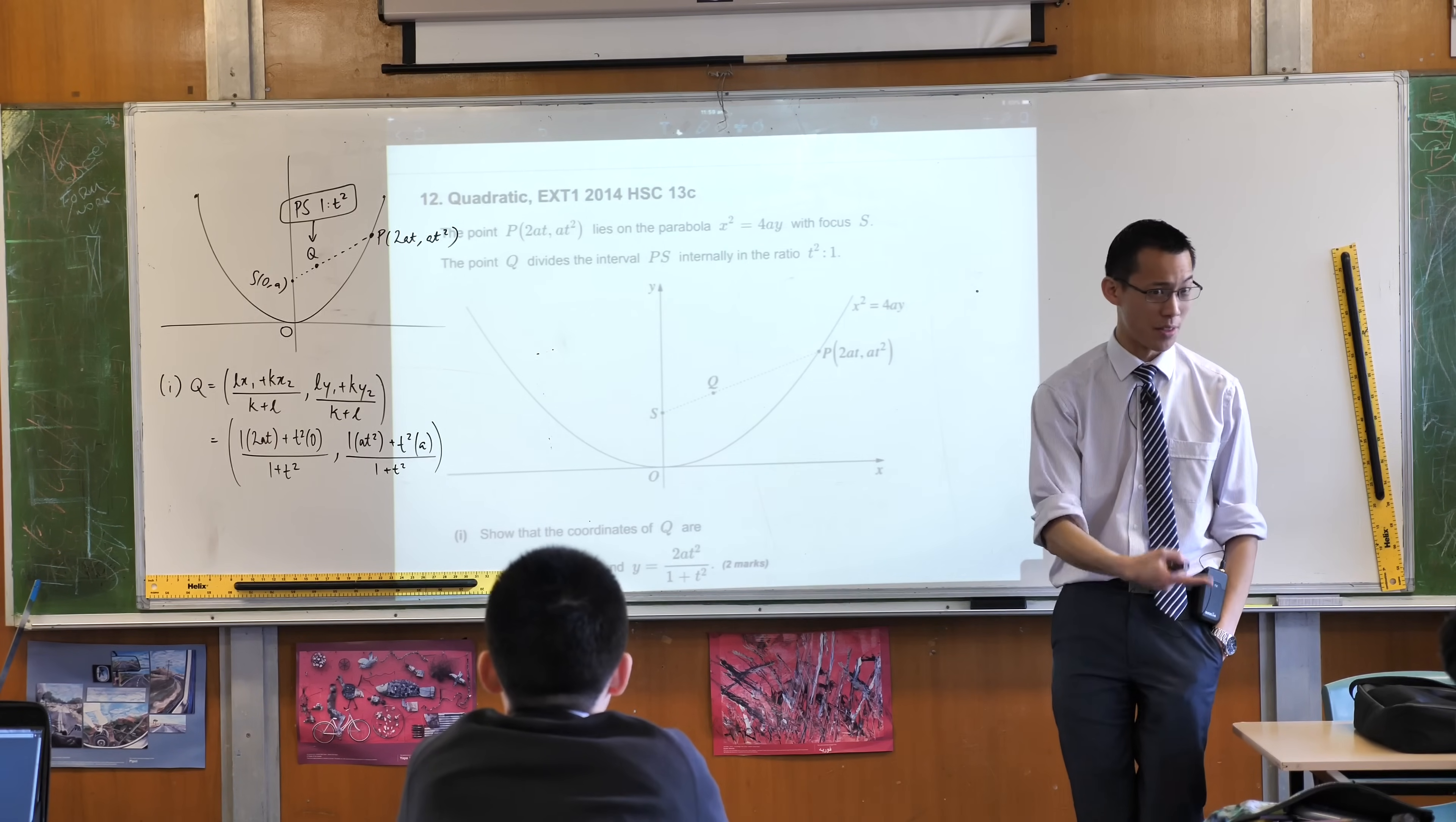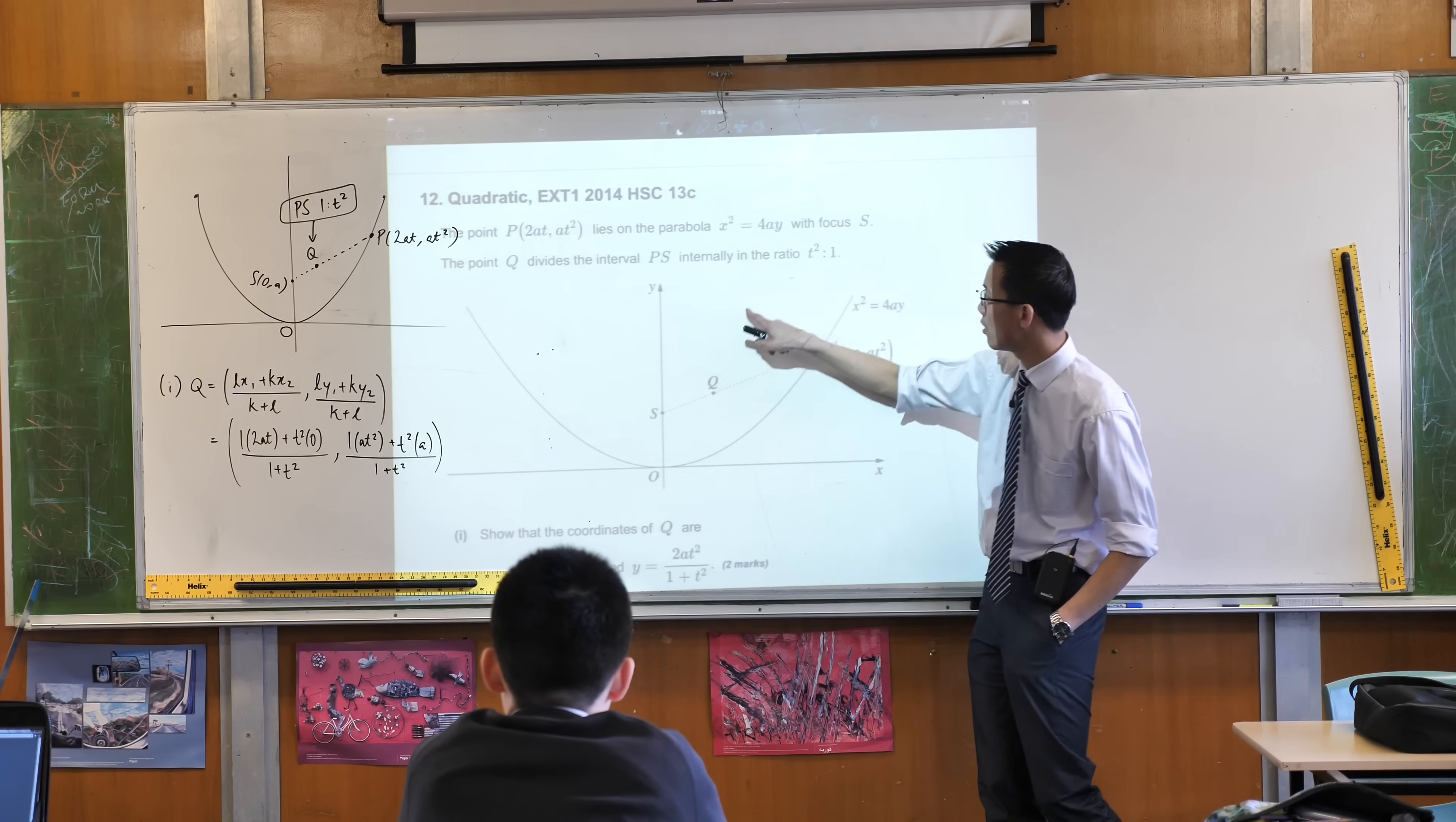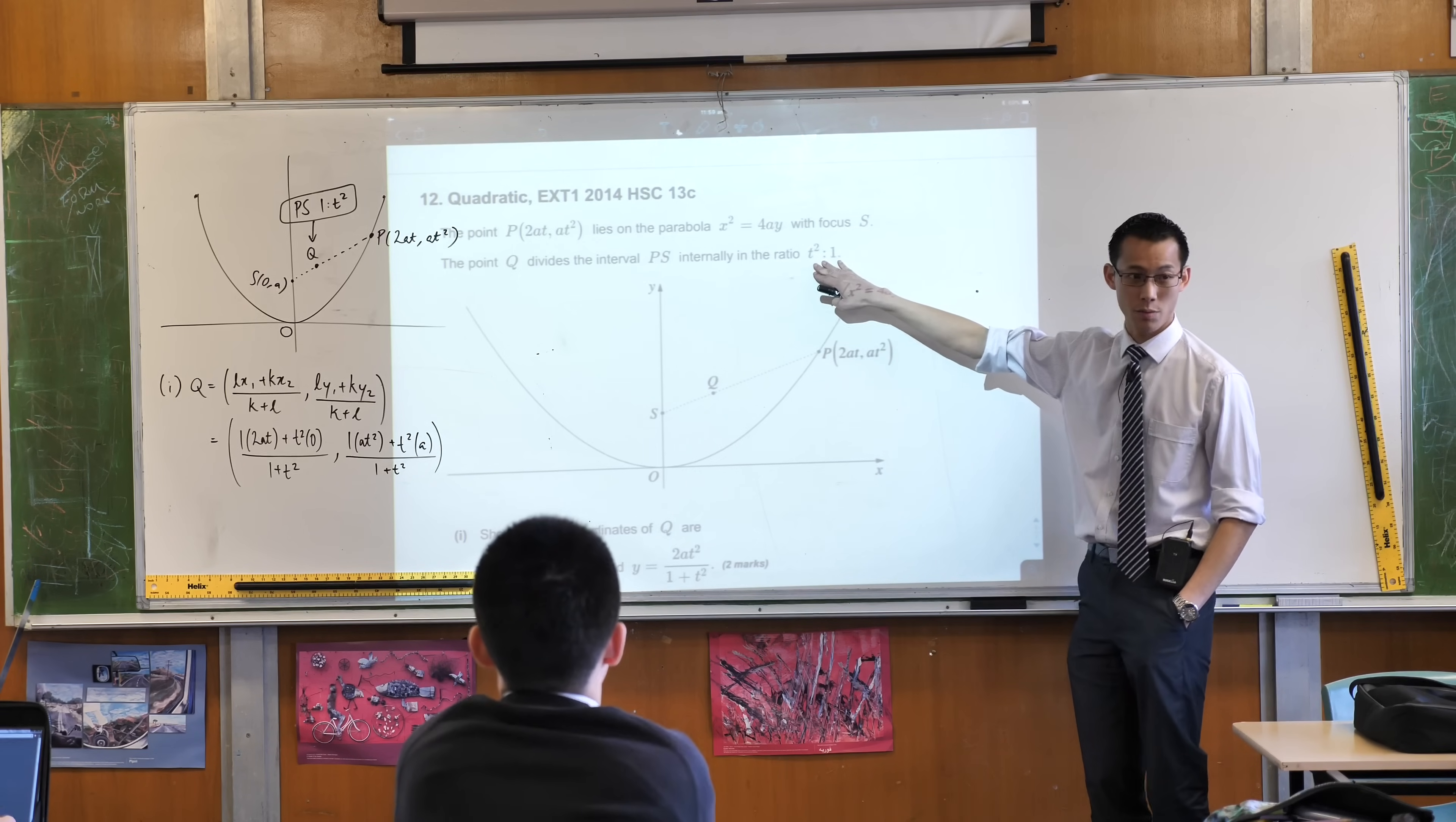Vertexes of the origin, x squared equals 4ay, everything looks normal, with the exception of one feature. This guy. So q, uncharacteristically, is not a point on the parabola.